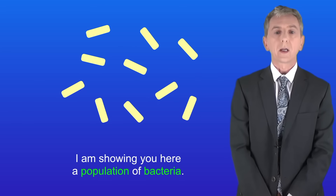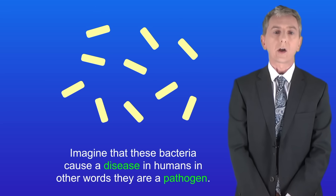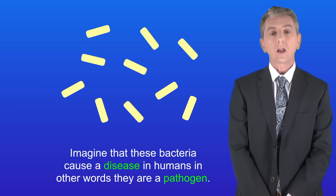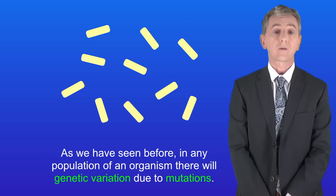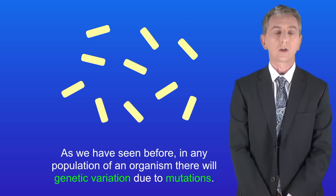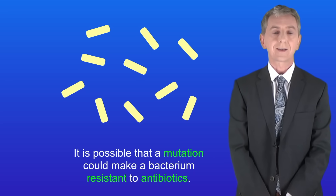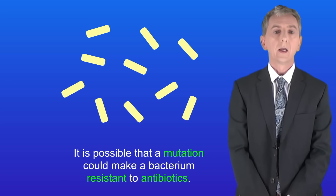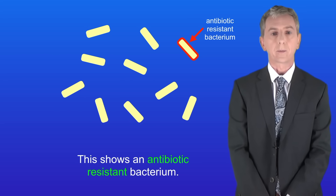I'm showing you here a population of bacteria. Imagine that these bacteria cause a disease in humans — in other words they're a pathogen. Now as we've seen before, in any population of an organism there will be genetic variation due to mutations. It's possible that a mutation could make a bacterium resistant to antibiotics, and I'm showing you an antibiotic resistant bacterium here.